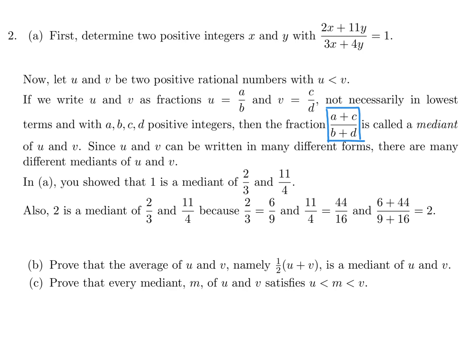First, determine two positive integers x and y. Let me just do the math: 2x + 11y = 3x + 4y, and therefore x = 7y. Any integers would work since they're just saying 'determine two.' So I'll let y equal 1, and if y equals 1, then x would equal 7. There are infinitely many others, but this is just one solution.